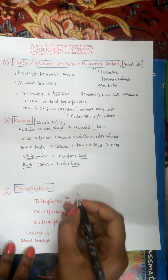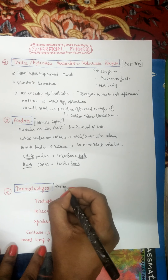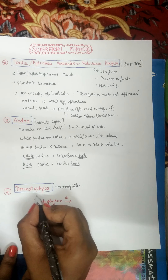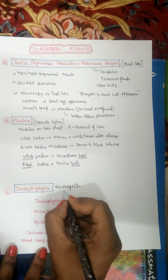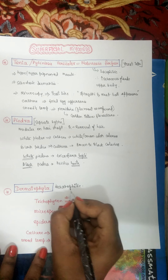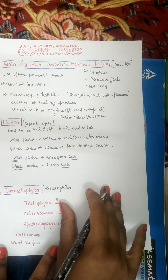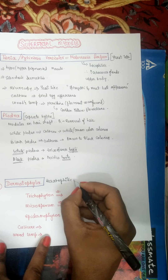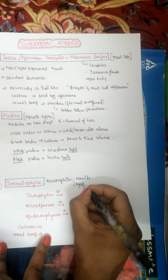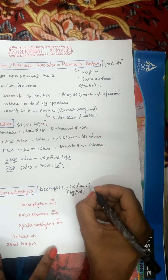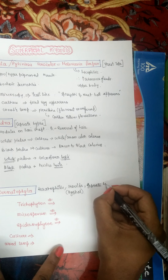Coming to dermatophytes — dermatophytes are a group of fungi that are keratophilic, meaning they thrive in media rich in keratin. They only affect the superficial layers of skin, nail, and hair and cannot invade deeper, which is why they are grouped under superficial mycosis. Dermatophytes belong to the mold type, showing septate hyphae.